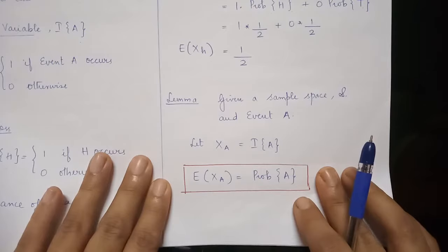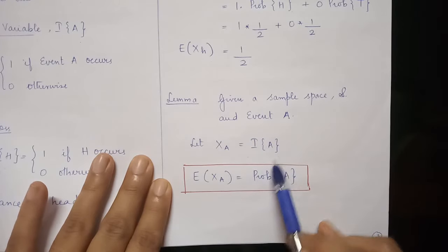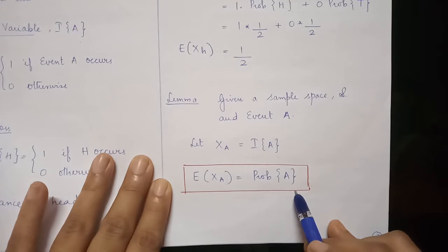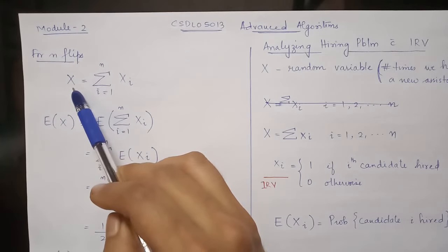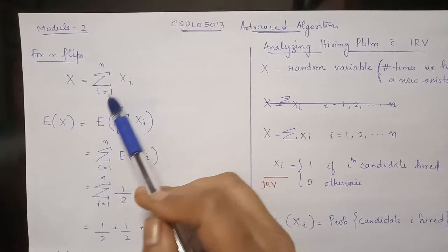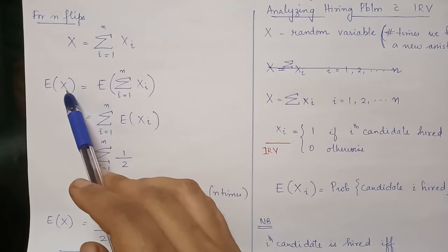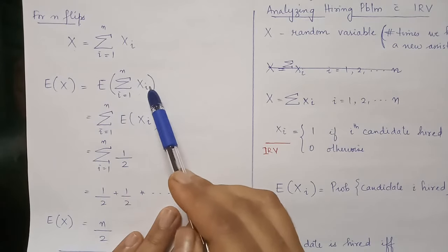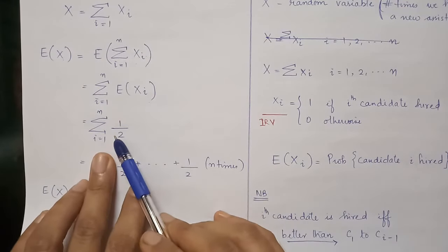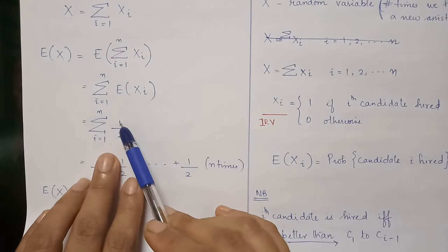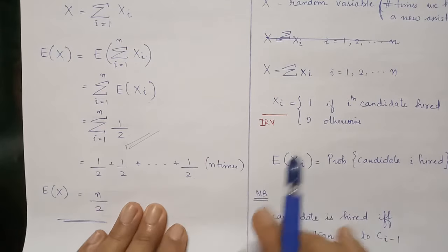Now we discuss a small lemma: given a sample space S and event A, where Xa is the indicator random variable, the expectation of Xa equals the probability of A. Now consider n coin flips. Capital X equals the summation of Xi over i from 1 to n. Applying expectations on both sides and using the linearity of expectations, E[X] = summation of 1/2 from i=1 to n, which equals n/2.